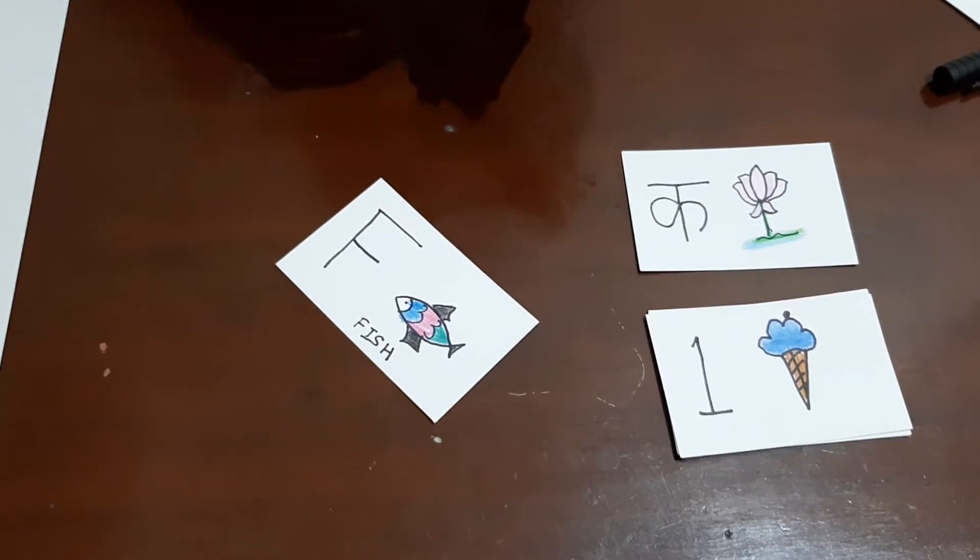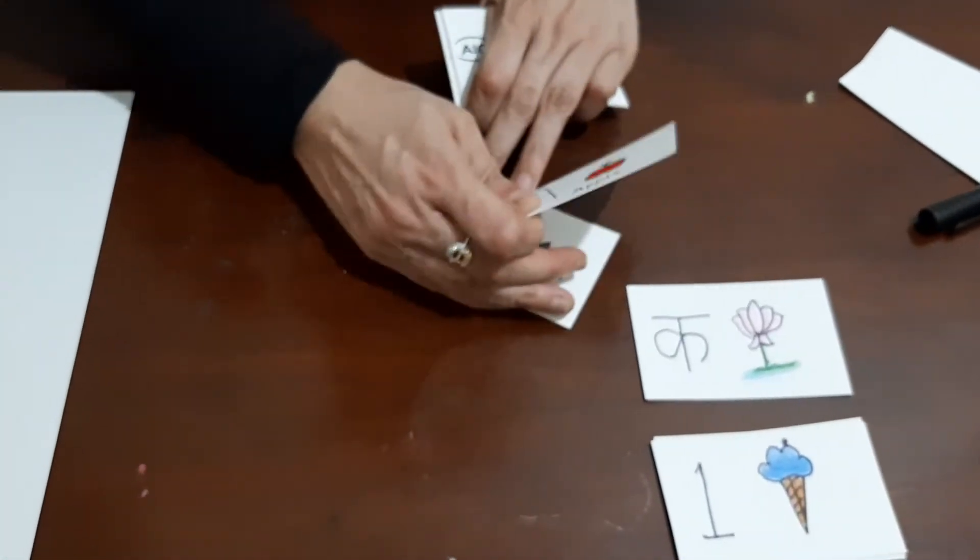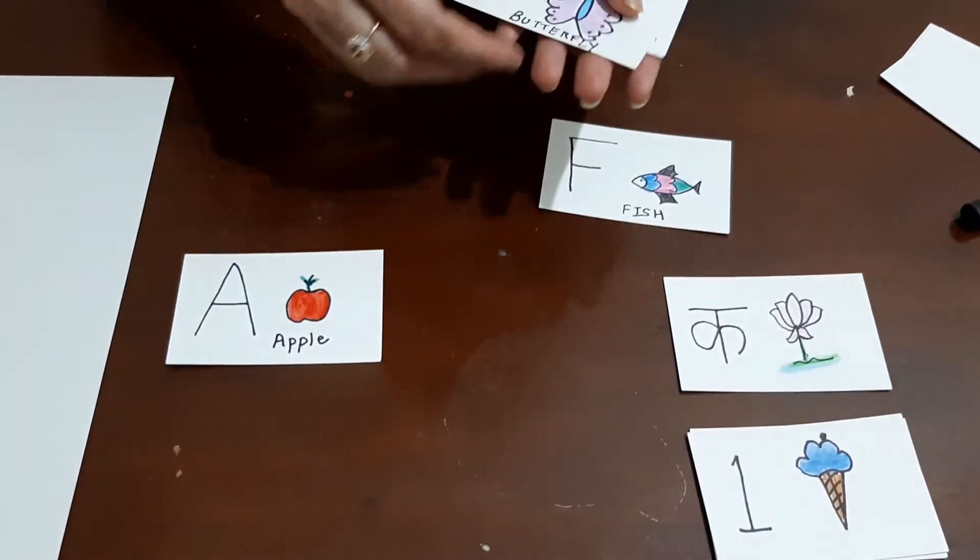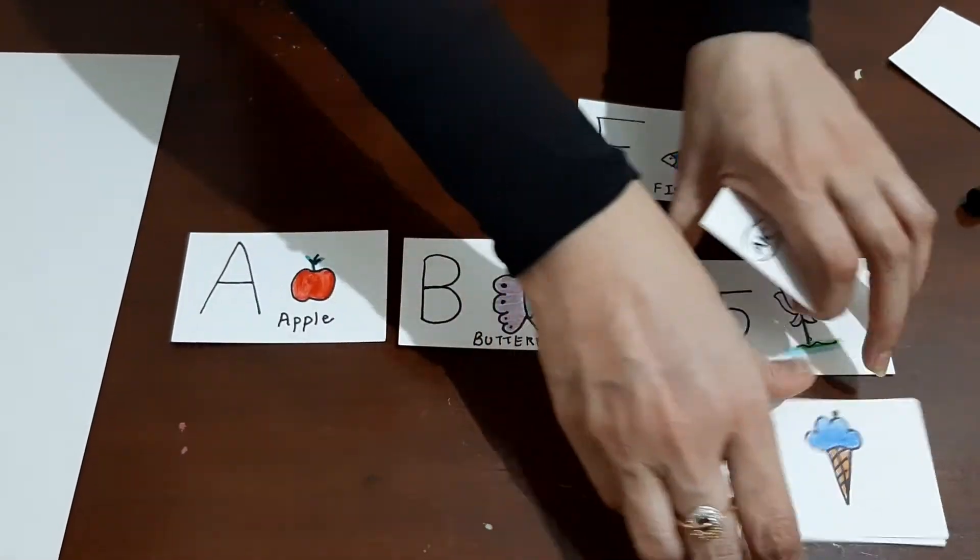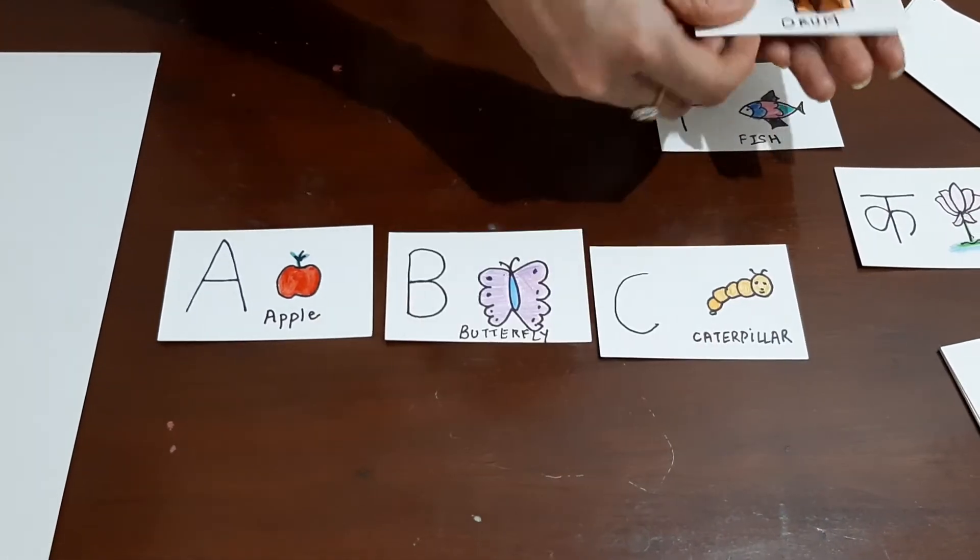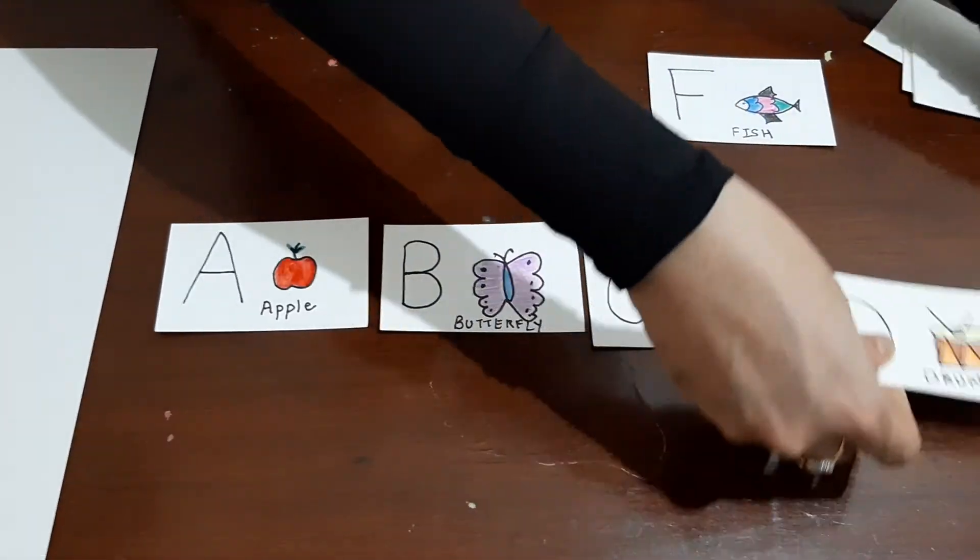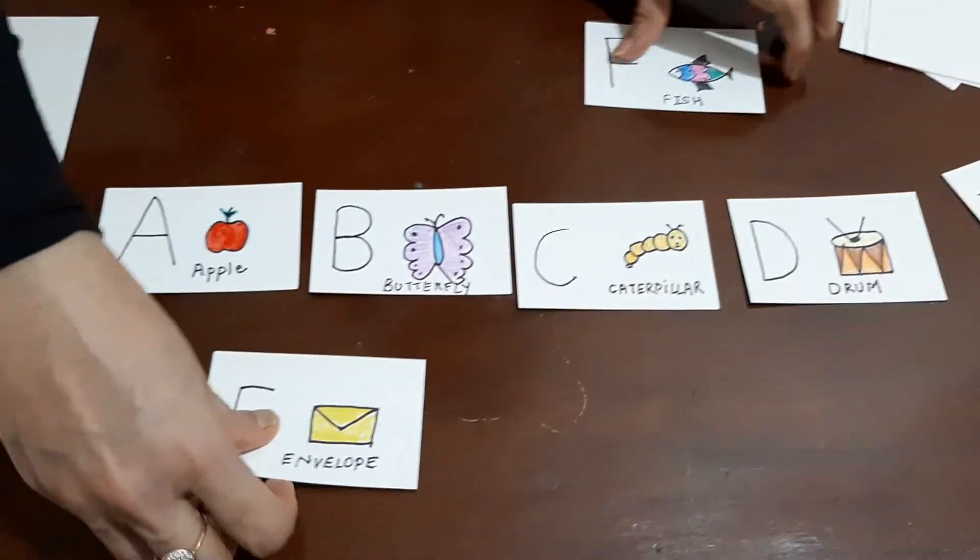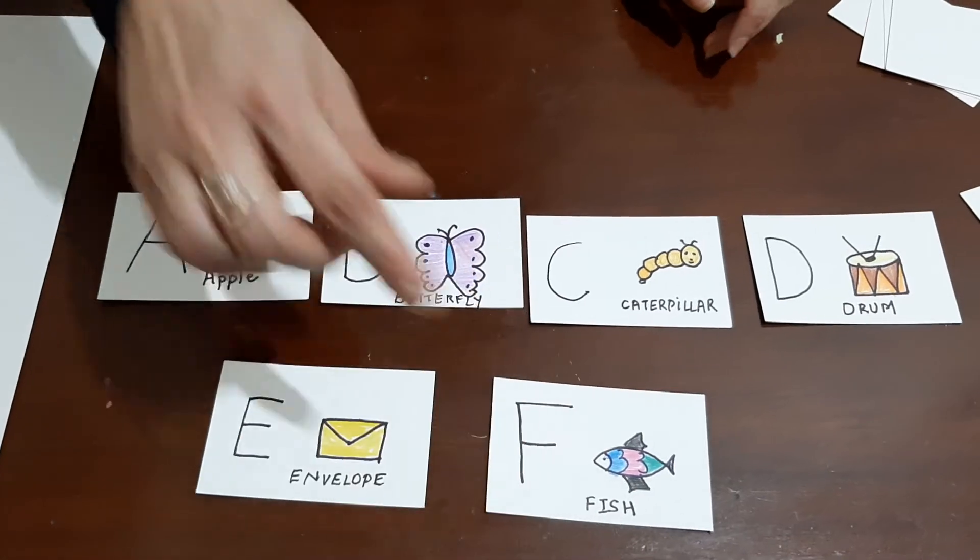I have already made some flashcards like this. Now you can teach your child: A for Apple, B for Butterfly, C for Caterpillar, D for Drum, E for Envelope, F for Fish.